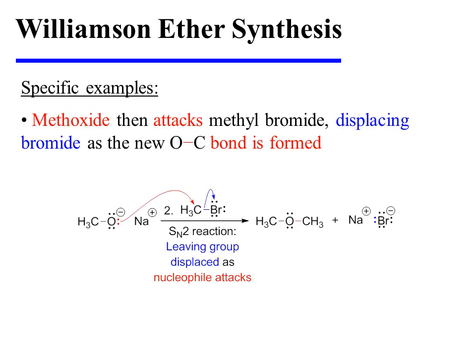In the second step of this synthesis, sodium methoxide is treated with methyl bromide. The alkoxide attacks the electrophilic carbon, thereby displacing bromide as a leaving group. This reaction forms the new carbon-oxygen bond of the ether product, which is dimethyl ether.